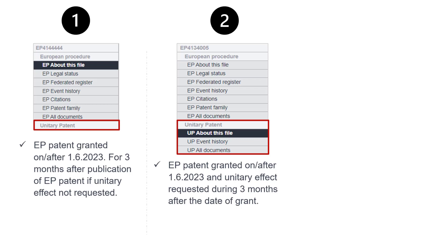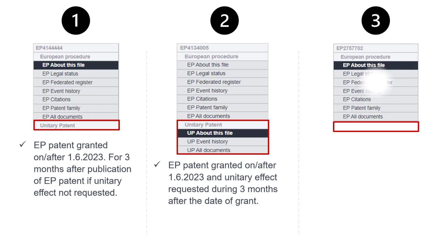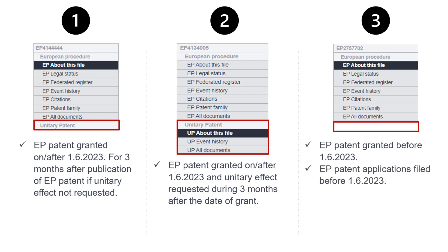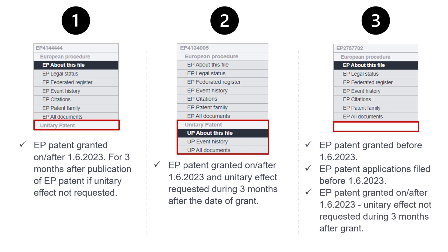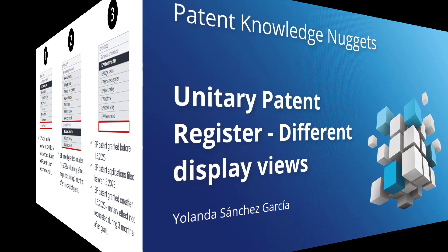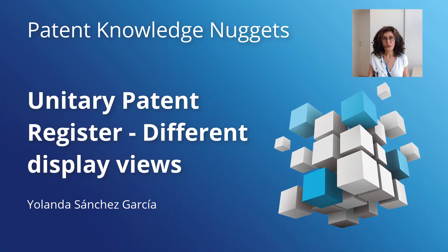And lastly, Scenario 3: the Unitary Patent Register is not available for European patents granted before the 1st of June 2023, for patent applications filed before that date, and for European patents granted on or after the 1st of June 2023 for which unitary effect was not requested during the first three months after grant. And that brings me to the end of this video. I hope that you have found it useful and thank you for watching. Have a great day.